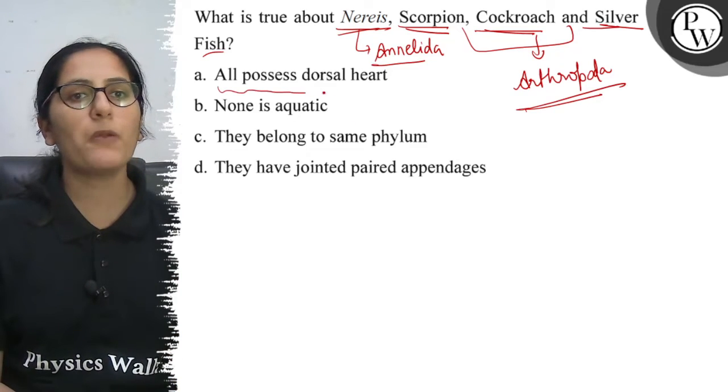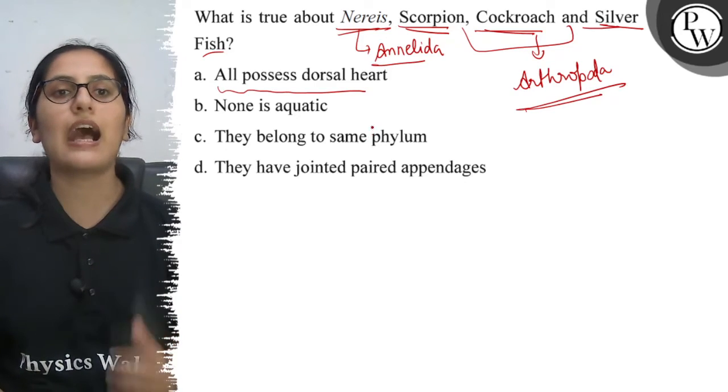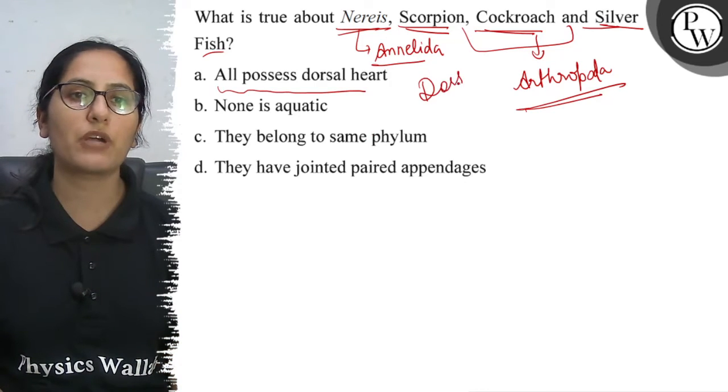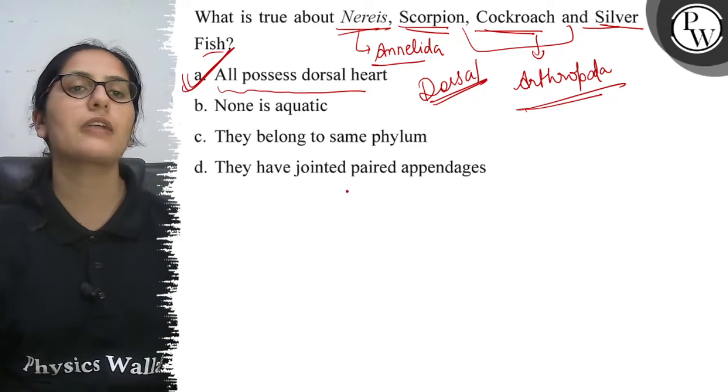Option A, all possess dorsal heart. So it's the right thing, that if there is a heart present, then where is it? So we can say that in all of these dorsal heart is present.